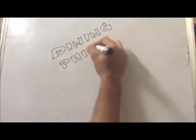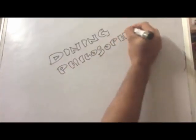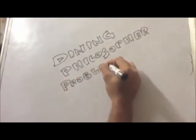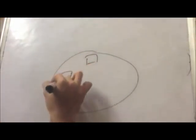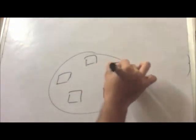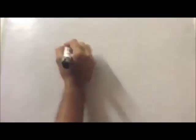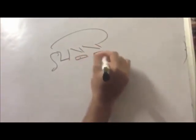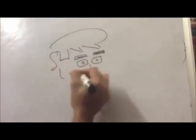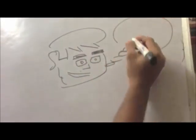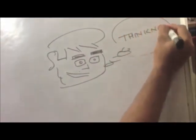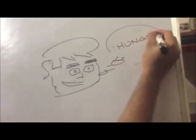Hello everyone. In this video we are going to discuss the Dining Philosopher Problem. Initially we have a table with a set of five plates and a fork lying next to each plate. We have five philosophers whose only work is to keep thinking, or feel hungry and eat.